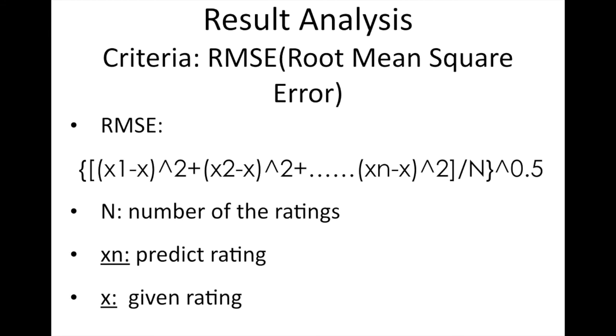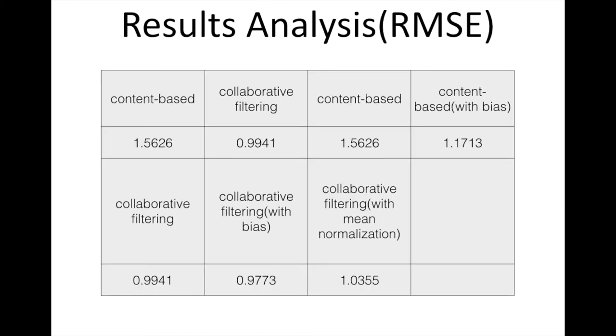Now we come to the result analysis part. The criteria is the root mean square error, a typical criteria for recommender system. Here, capital N represents the ratings in validation set. X_N is the predict rating we create and X is the given rating. Here are some results I've got. The RMSE for only content-based recommendation without added bias and regularization term is about 1.5.